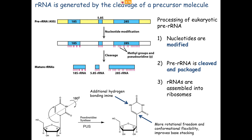Not all uracils are turned to pseudouridines — just a few, ranging from about 0.2% up to 4% in some tRNAs. The idea is that the methyl groups and pseudouridines protect that segment of RNA from being degraded. RNases come along and wherever they have access, they cleave the strand. These modifications protect the important regions, so the amber unmodified regions get chewed apart, leaving the three rRNAs that will eventually be further modified and exported.